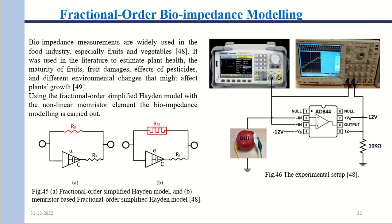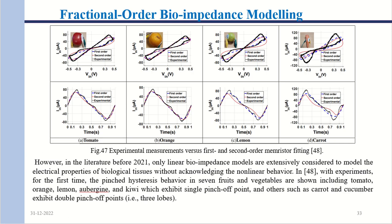Moving on to fractional order bioimpedance modeling. Many fruits and vegetables — their moisture content, sugar content, and ripening factor — can be determined by applying a signal and analyzing the impedance response, known as impedance spectroscopy. Figure 47 shows results for apple, orange, lemon, and carrot, with data showing time versus current.